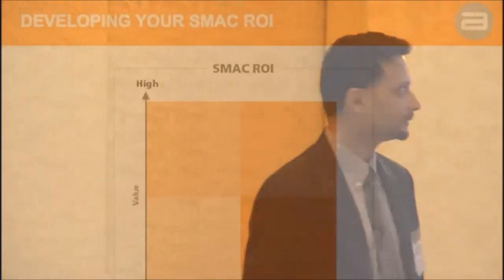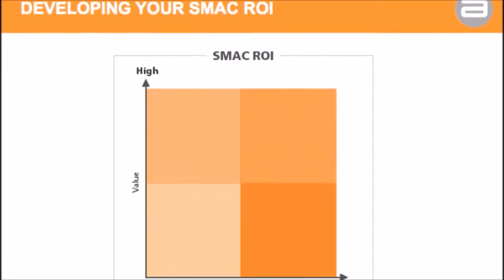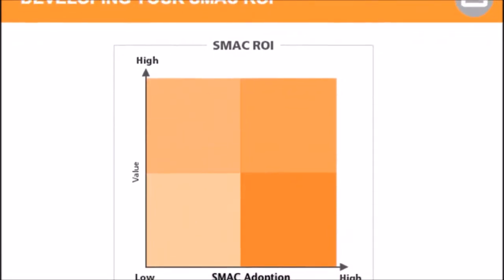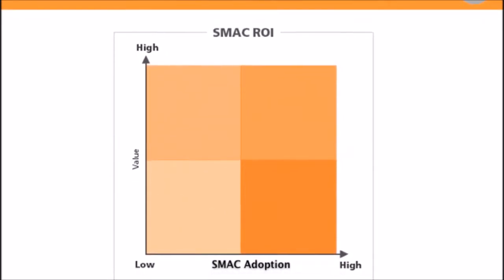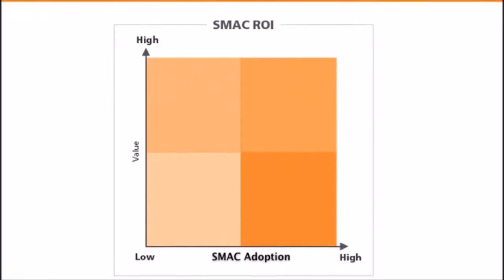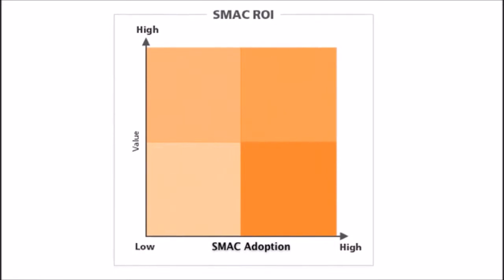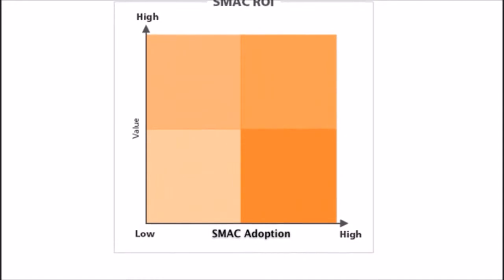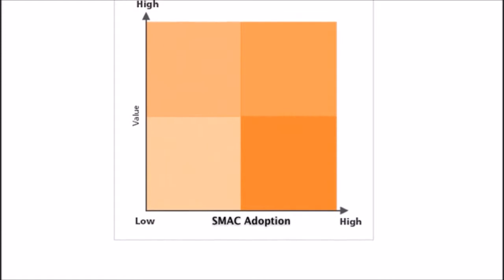The last tool I'll talk about is what I call the SMACK ROI Dashboard. It's a two-by-two matrix where the x-axis is SMACK adoption — how much has your company adopted the SMACK stack — and the y-axis is value, meaning how much value are you generating by adopting the SMACK stack.